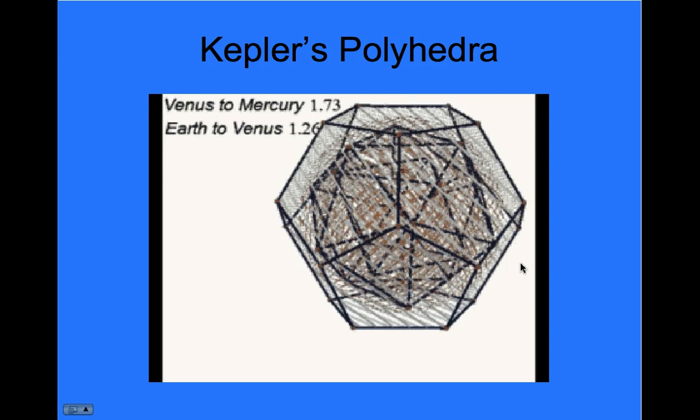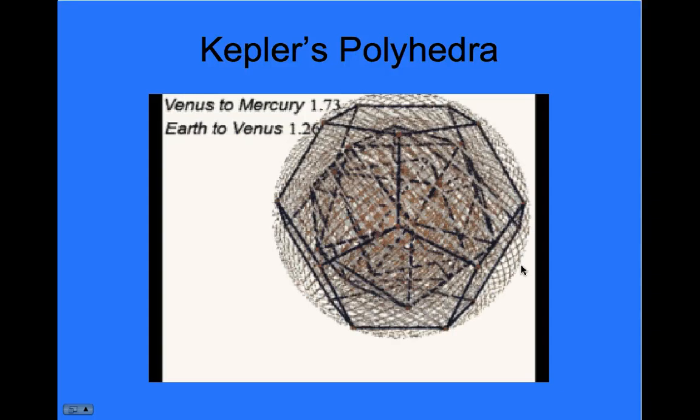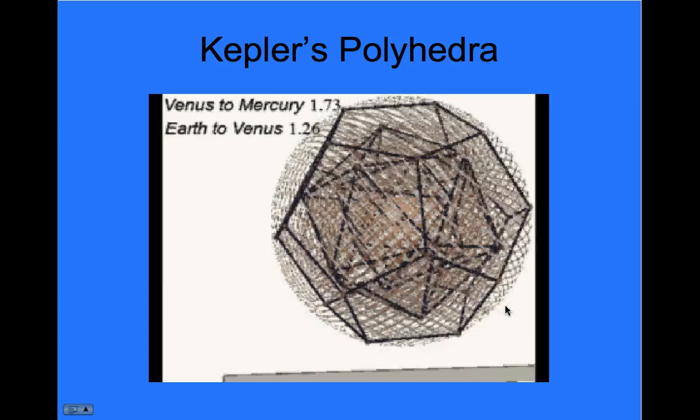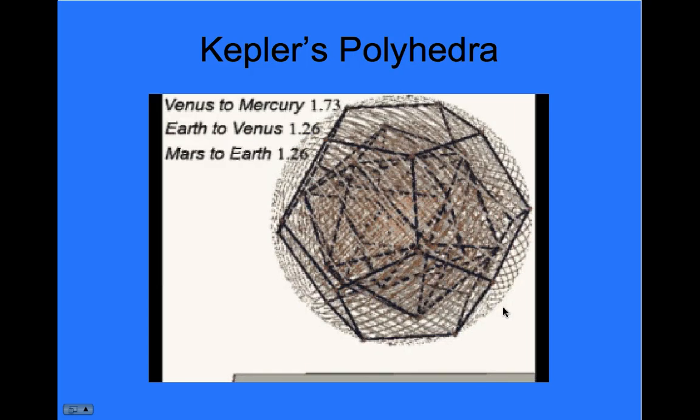Around Earth's sphere, we put a dodecahedron, and we put a sphere around that, and that tells us the ratios of those is fairly close to the ratio of Mars to Earth.